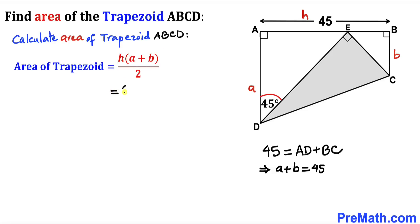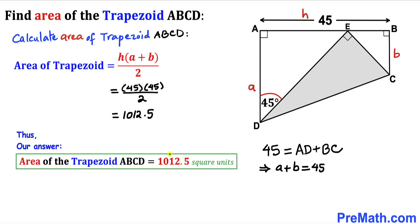Filling in the formula: Area = 45 × 45 / 2, which simplifies to 1012.5. So the area of trapezoid ABCD is 1012.5 square units. Thanks for watching — please subscribe for more exciting videos!